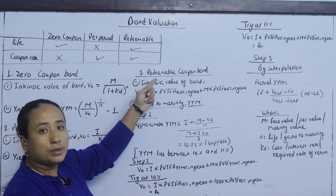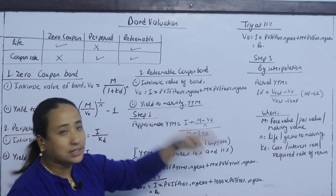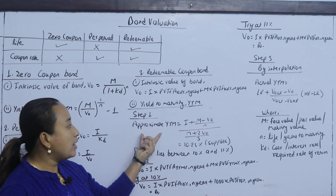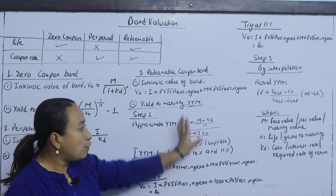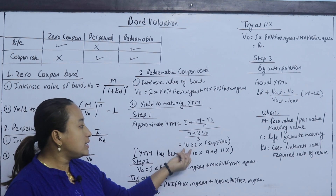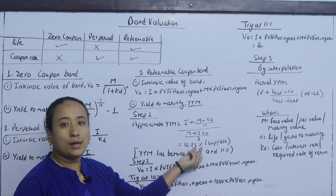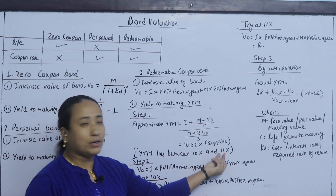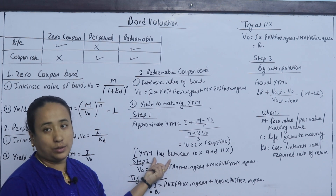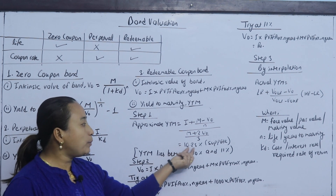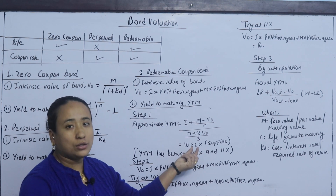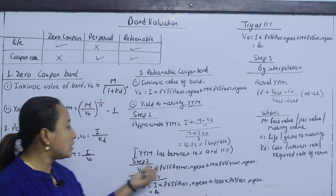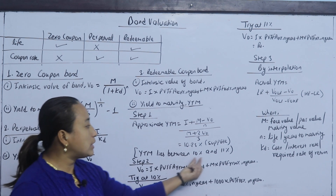For the redeemable coupon bond, we need to do three steps to find YTM. In step 1, we use the approximate YTM formula. If the result is 10-point-something, YTM lies between 10% and 11%. If it is 12-point-something, it lies between 12% and 13%.